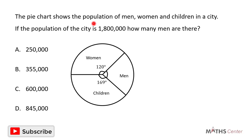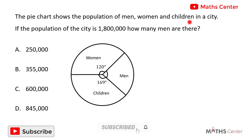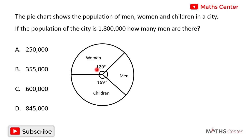The pie chart shows the population of men, women, and children in a city. If the population of the city is one million eight hundred thousand, how many men are there? This is a multiple choice question, so we solve the question and then pick the correct option. In the pie chart, the angle of the sector occupied by the women is 120 degrees and the angle of the sector occupied by the men is 169 degrees.